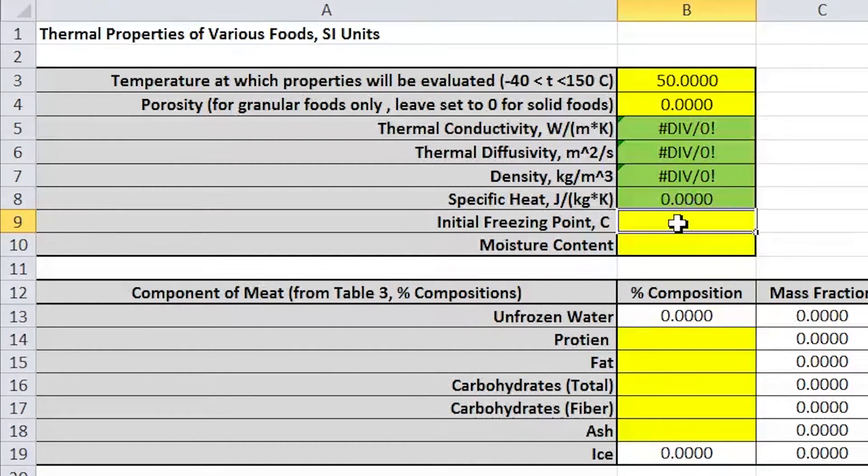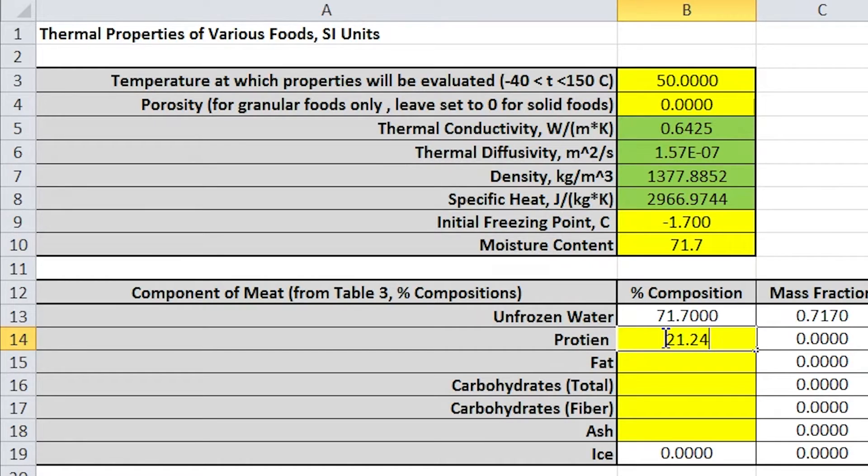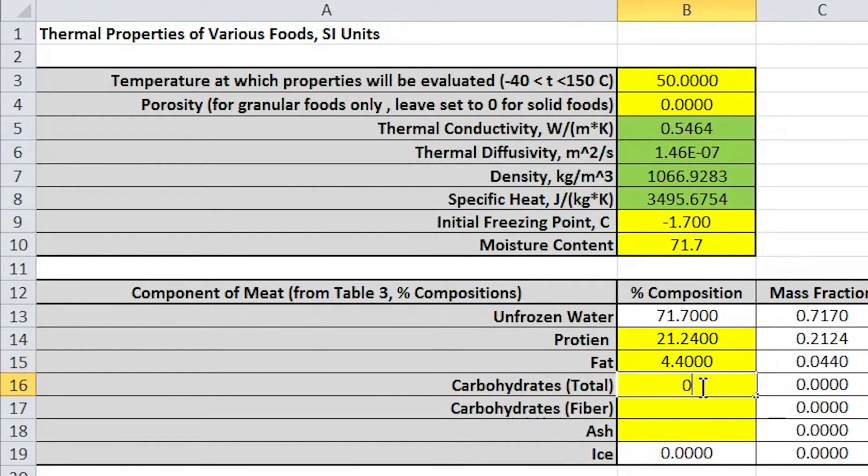I will now enter the initial freezing point, moisture content, protein content, fat content, carbohydrate and fiber content, and ash content of the lean beef sirloin.